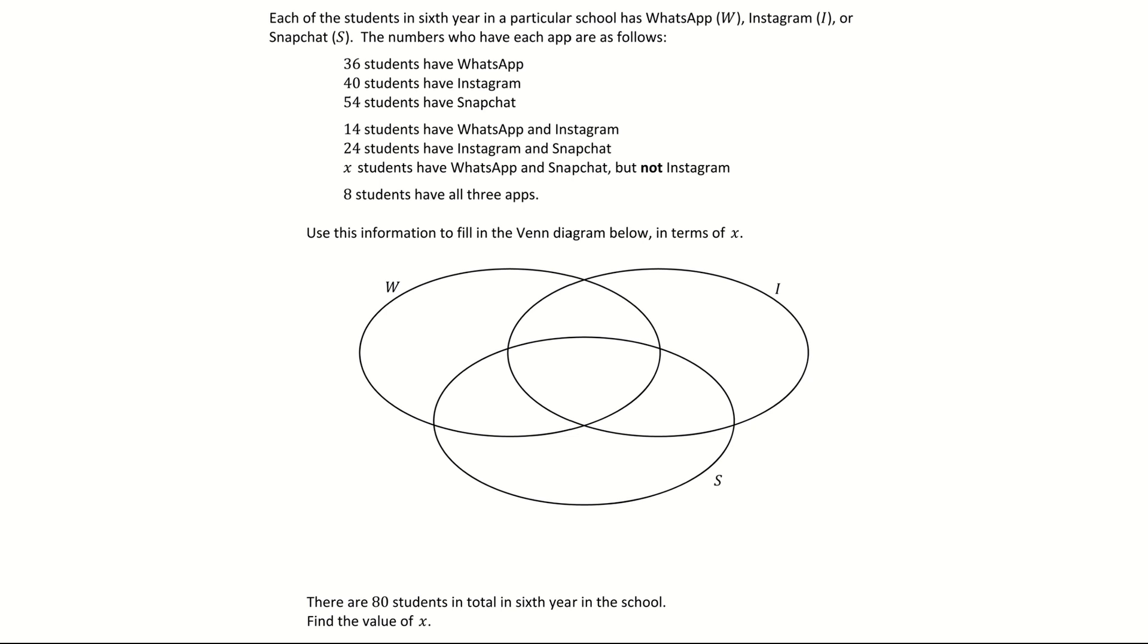So always good practice when you're doing these questions is to start by filling in the intersection first of all. So that's the middle region. Then fill in the missing letter, the x in this case. So we kind of need to start from the bottom here. It says that eight students have all three apps. So that's the intersection of all three. So the key word there is the all. So that's the intersection of the three sets. So I'm filling in my eight in the middle. That's the first one done.